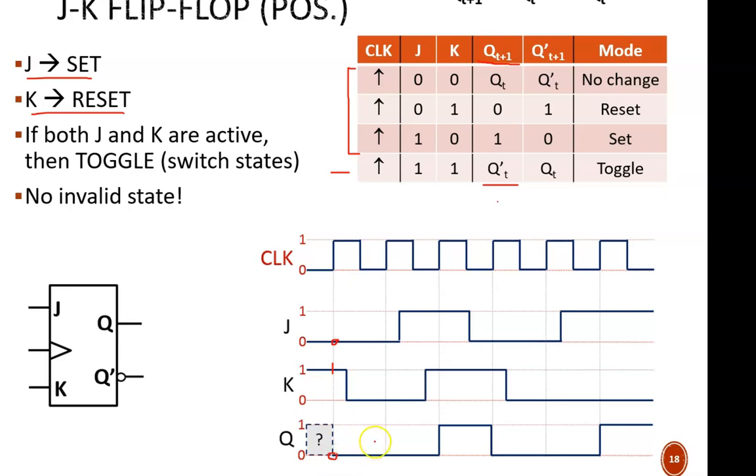Now Q is just waiting, waiting, waiting at 0 until it is enabled to change on the next positive edge. That occurs here. So I look at the instructions. J equals 0 and K equals 0. This is no change mode, so Q remains at 0.